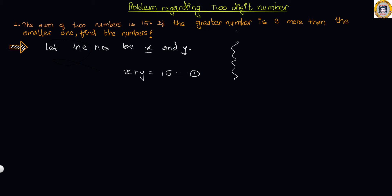The second condition tells us that the greater number is 9 more than the smaller number. So X equals 9 plus Y — whenever you add 9 to the smaller number you get the greater number. This becomes equation 2. Now if you substitute the value of X into equation 1, we get, instead of X, 9 plus Y.